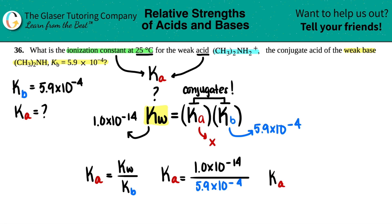So here we go. Ka equals, drum roll please, two sig figs but nobody cares. 1 times 10 to the negative 14th divided by 5.9 times 10 to the negative 4th. And I get 1.7 times 10 to the negative 11th.